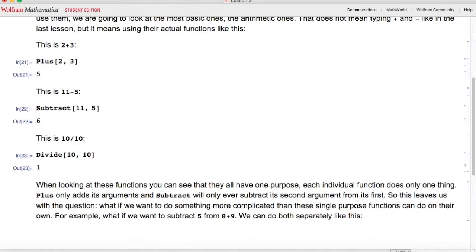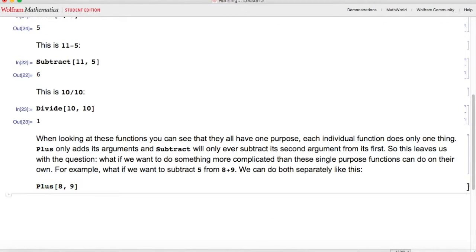We can do both separately like this. Plus of 8 comma 9. We see it's 17, and then using that knowledge, we can do Subtract of 17 comma 5 and get our answer 12.